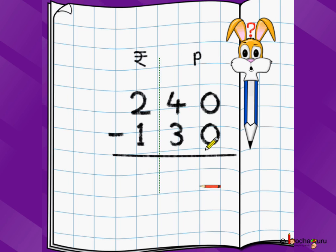Let's say you have 2 rupees and 40 paise and of that you have spent 1 rupee and 30 paise. So, you write 2 rupees, you divide this problem into 2 parts, rupee and paise. So, you say 2 rupees and 40 paise.